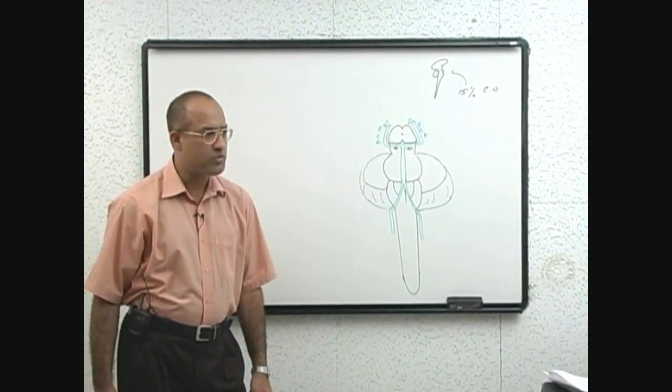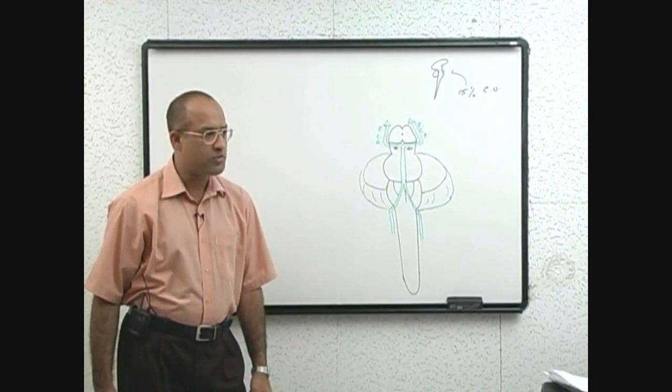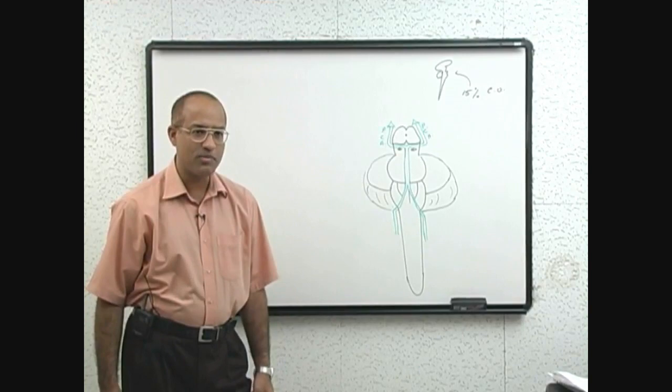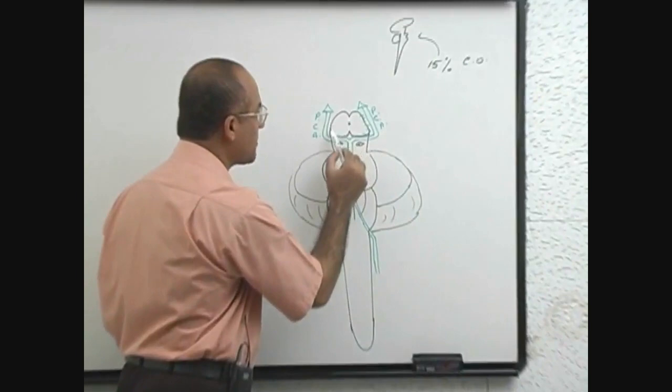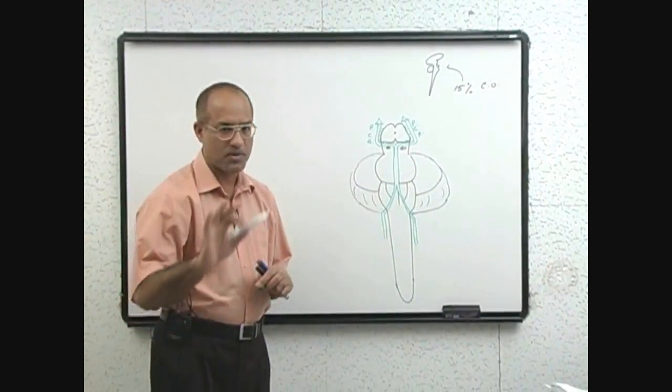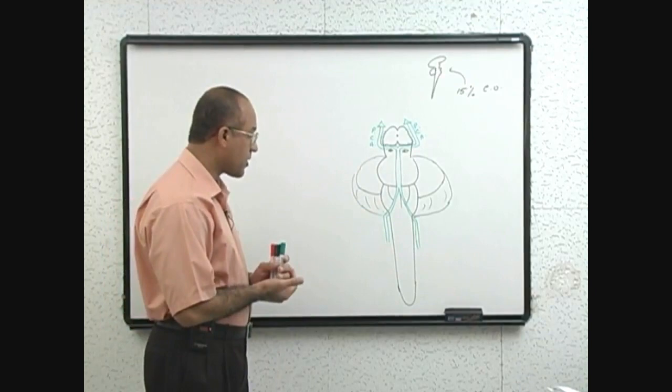Posterior cerebral artery supplies which part of the brain? Posterior part of the cerebral hemisphere, but please mention at least midbrain. They are moving around near the midbrain. Then of course, they go to the back of the cerebral hemisphere. Now, this is the basic structure. We bring the branches, important branches.